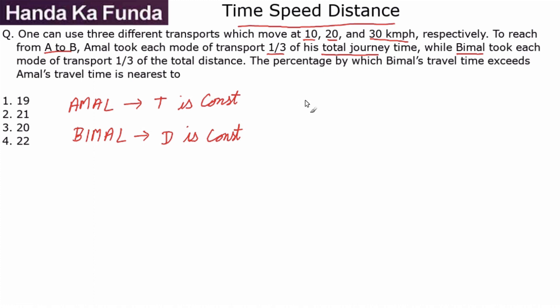Now if you have seen the concept videos of time, speed, and distance, you will know that the speed of Amal is nothing else but the arithmetic mean of the three speeds which are given: arithmetic mean of 10, 20, and 30, which is 20 kilometers per hour. Why? Because when time is constant, the speed is nothing else but the arithmetic mean of the values.